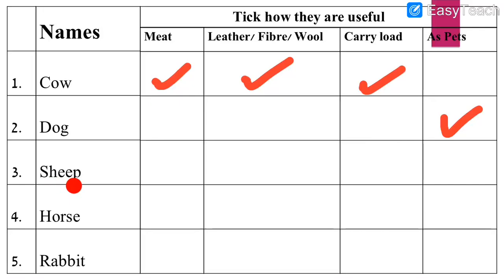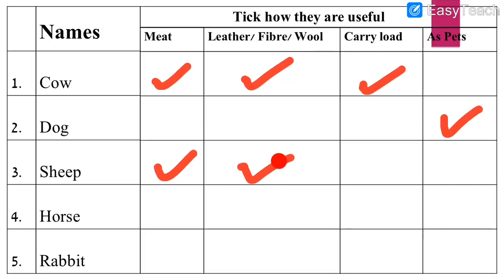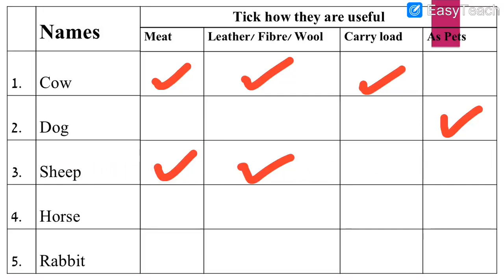Number 3: Sheep. Can we get meat from sheep? Yes, we get meat from sheep. Can we get leather, fiber, or wool? Yes, we get wool from sheep — we can make woolen clothes like sweaters, etc. Can sheep carry load? No, sheep will not carry load for us, so no tick mark. Can we keep sheep as pet animals in the house like dogs? No, we cannot, so that is not the correct answer.